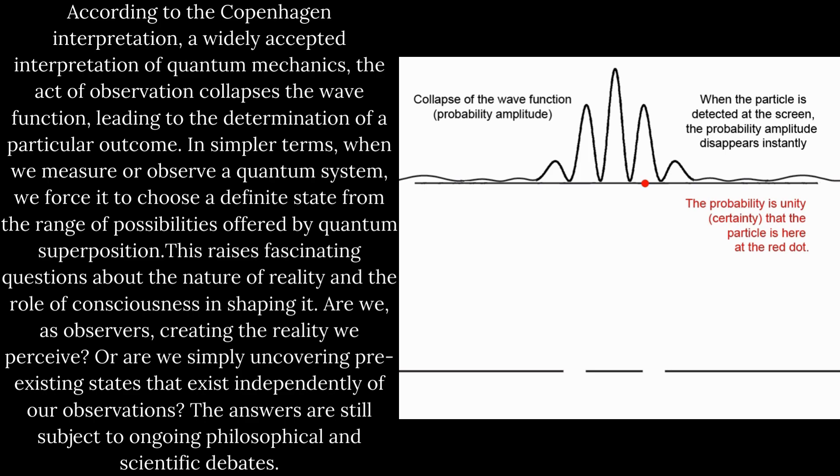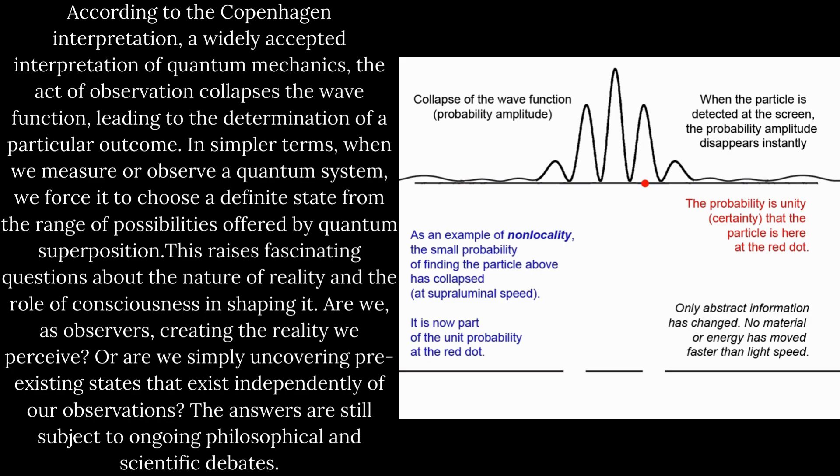In simpler terms, when we measure or observe a quantum system, we force it to choose a definite state from the range of possibilities offered by quantum superposition. This raises fascinating questions about the nature of reality and the role of consciousness in shaping it.